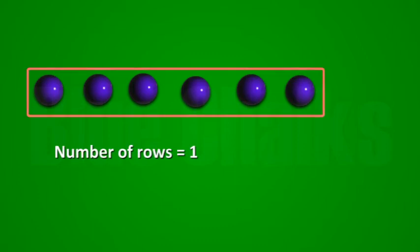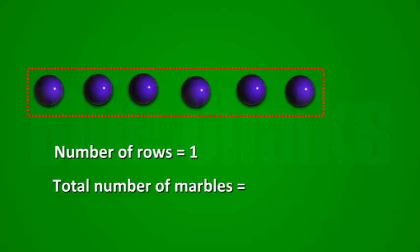You will not find any arrangement in which each row had four marbles or five marbles. So, the only possible arrangement left was with all the six marbles in a row. Number of rows is equal to one. So, total number of marbles is equal to six into one is equal to six.